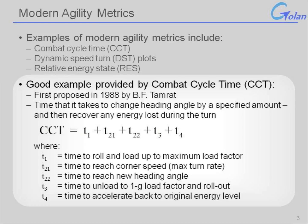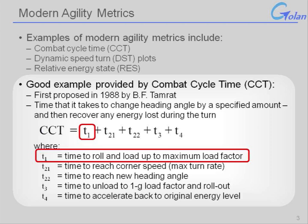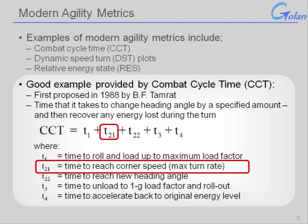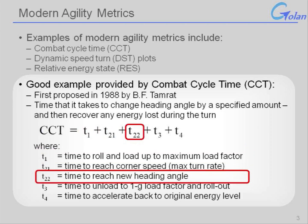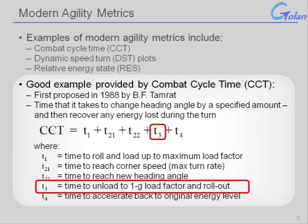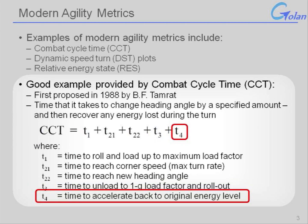Combat cycle time is really the time that it takes for an airplane to change heading by a specified amount and then recover energy lost during the turn. It can be broken down into the time segments to roll and load up to maximum load factor, reach the corner speed, reach the new angle of heading, unload back to 1G conditions, and accelerate back to the original energy level.